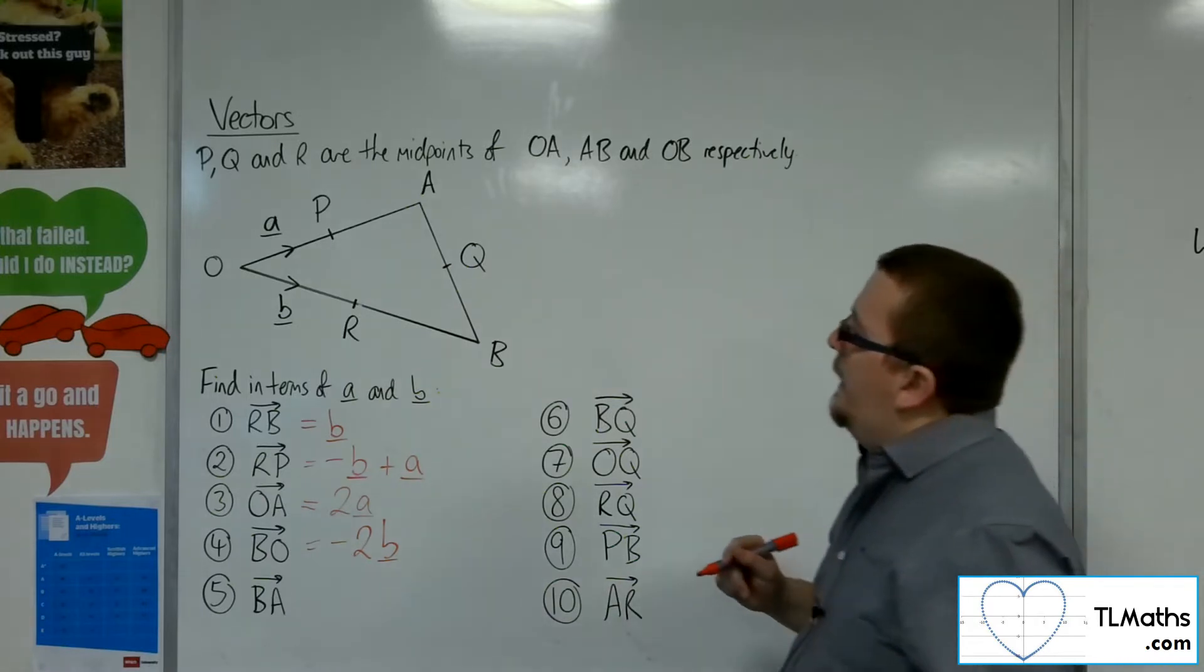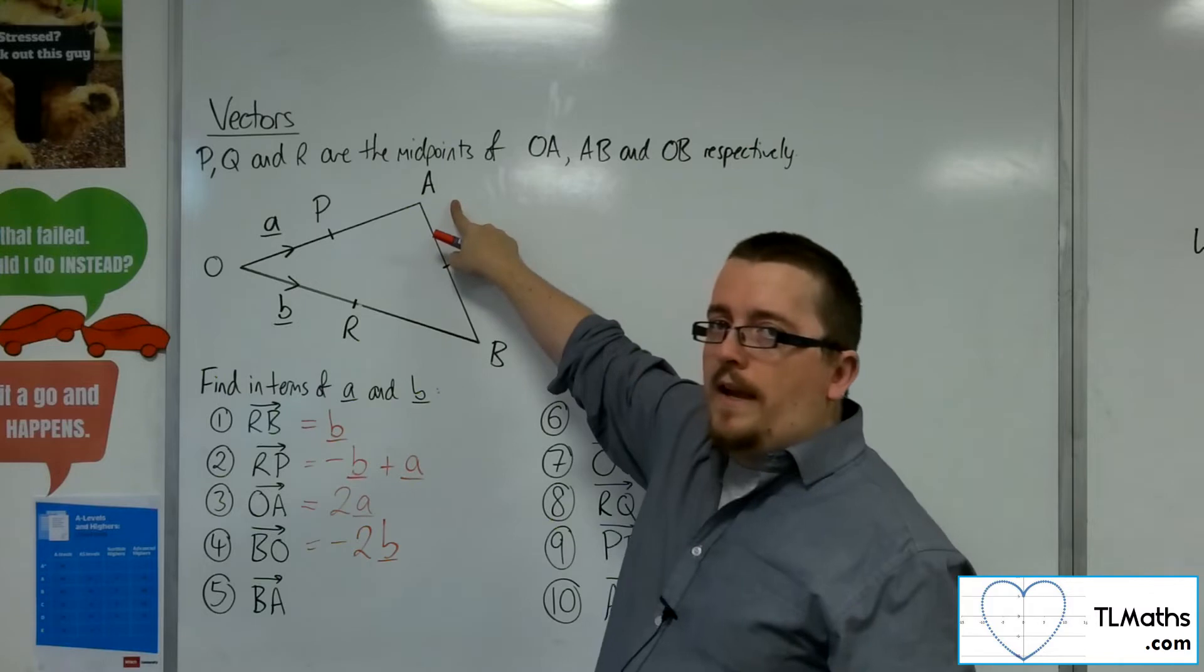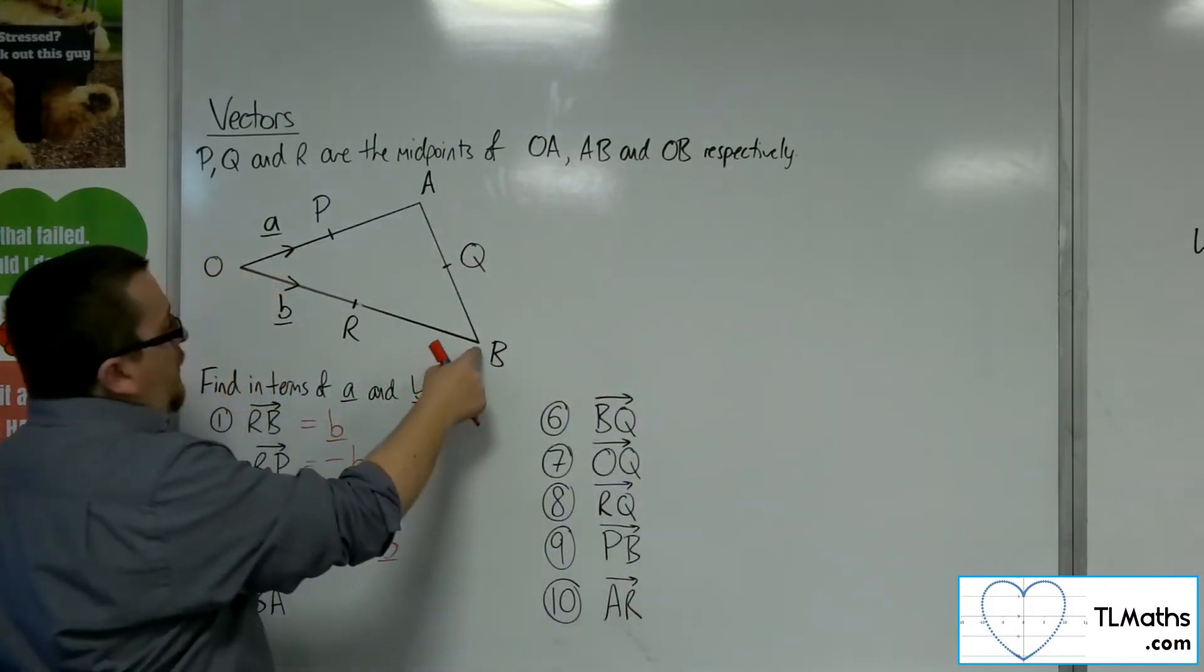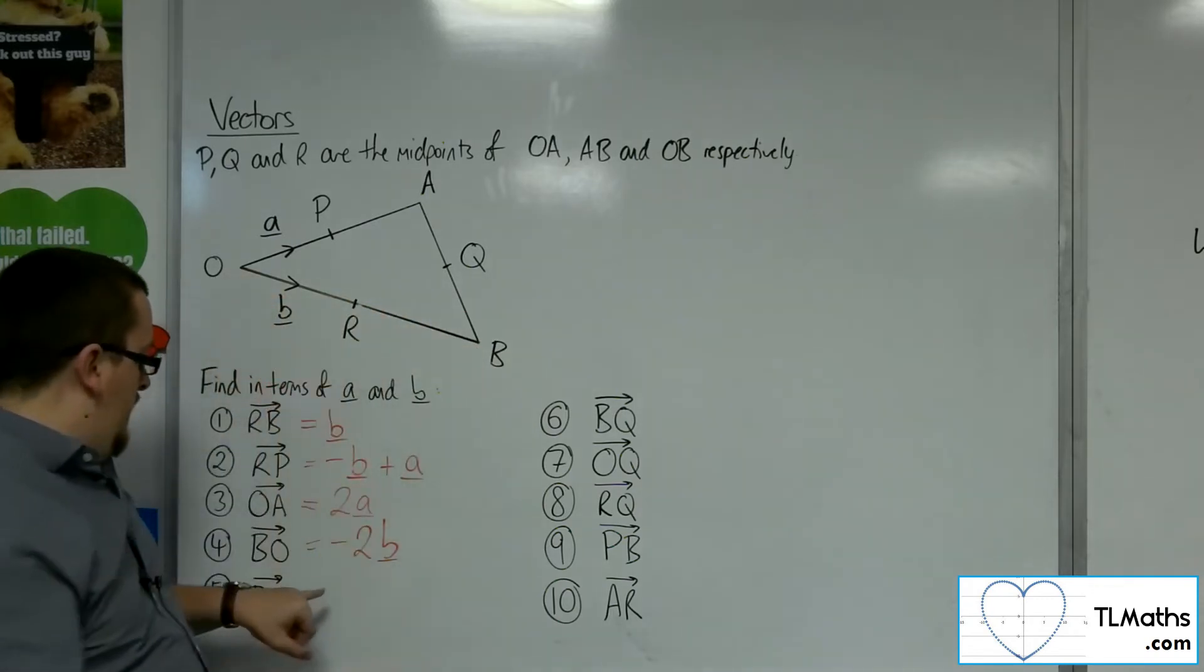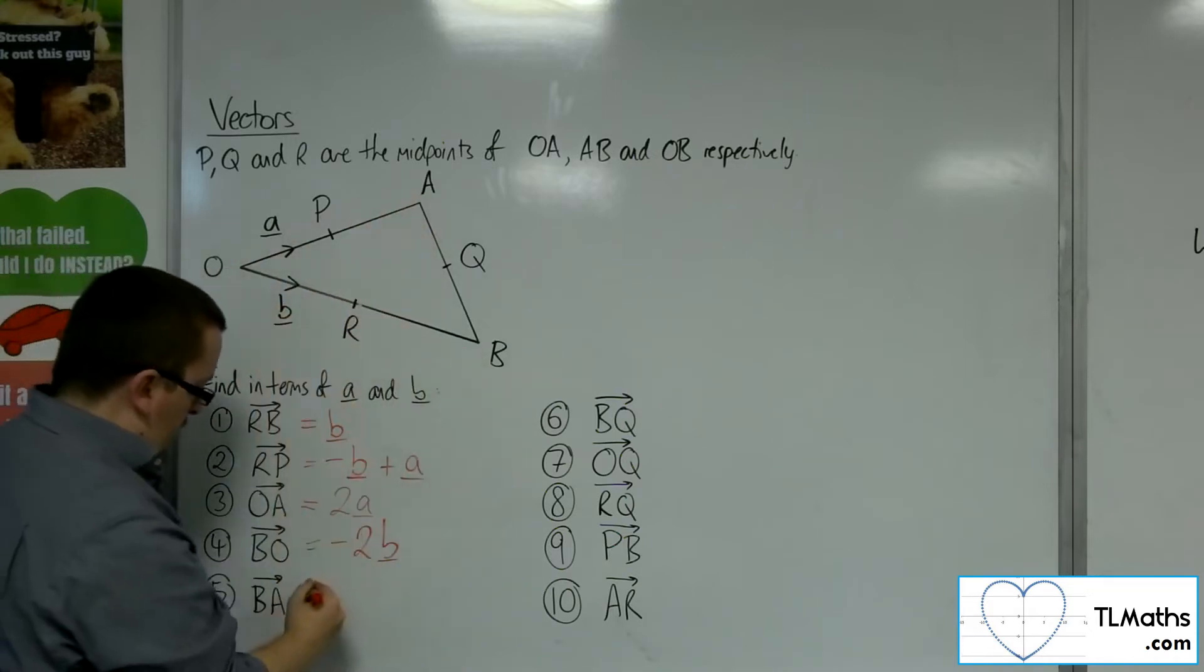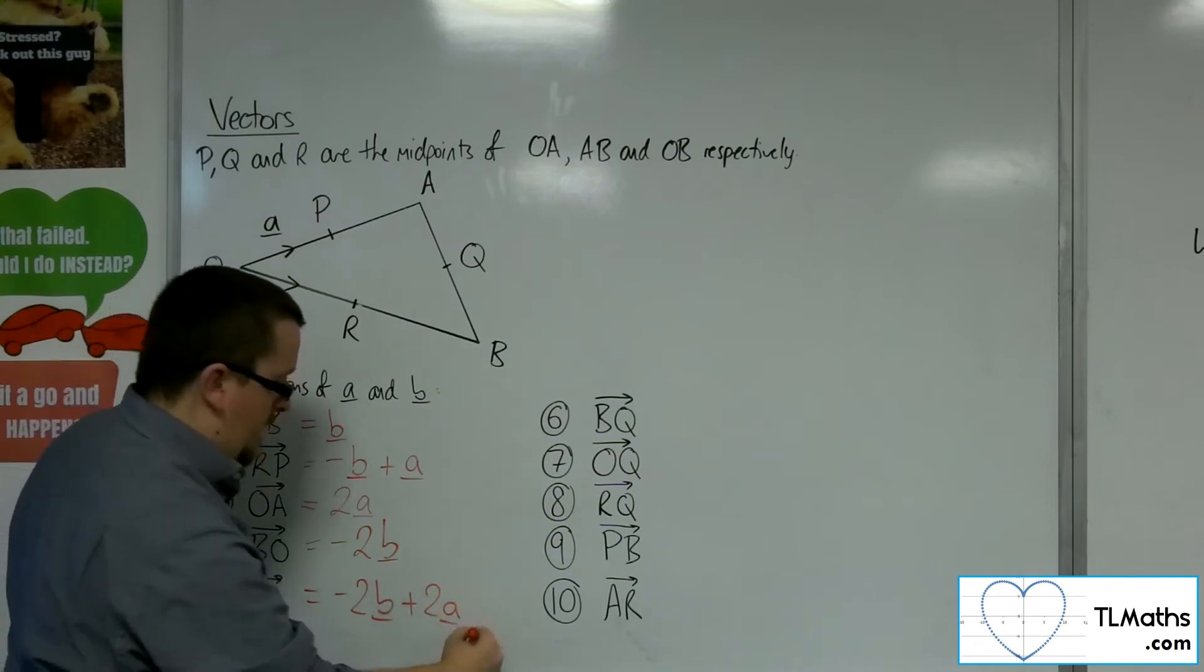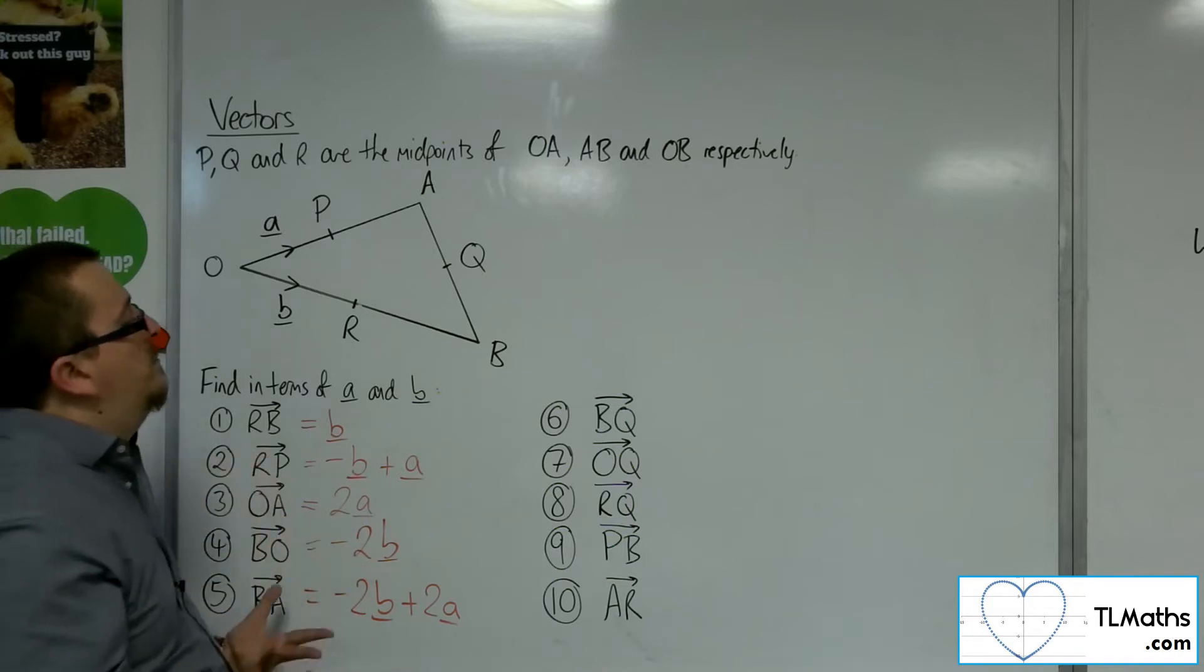How about B to A? So from B to A. Now I don't know either of those two vectors, so I'm going to have to go the long way around. So I know that to get from B to O, that's minus 2B. So I've just worked that one out. Minus 2B. And to get from O to A was 2A. So minus 2B plus 2A. So remember, vectors are just instructions of how to get from one point to another.